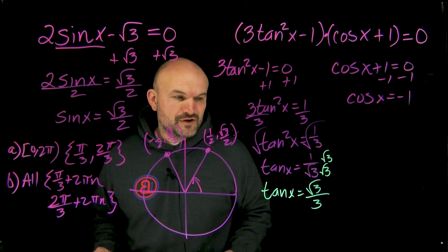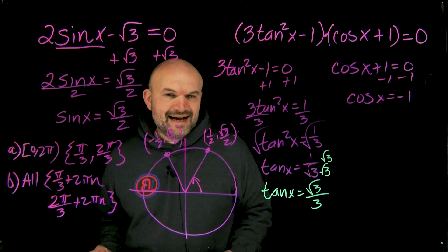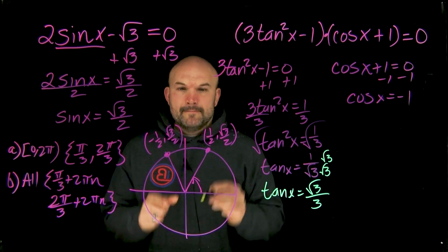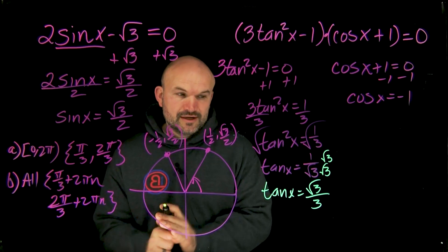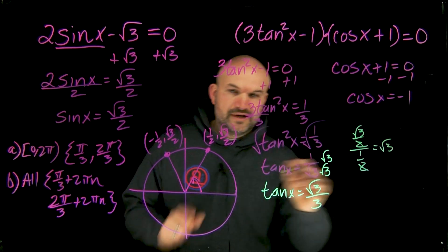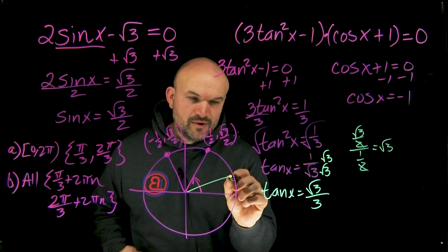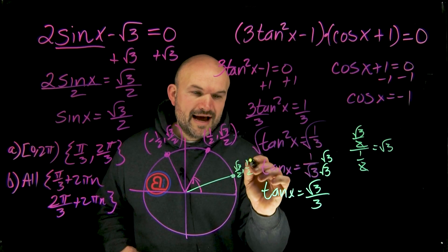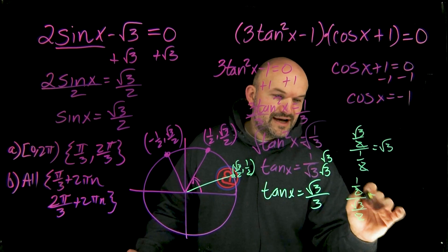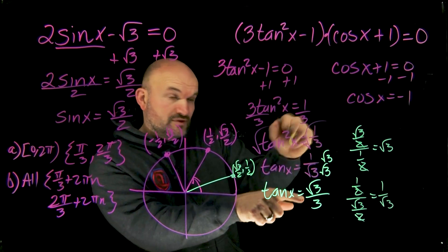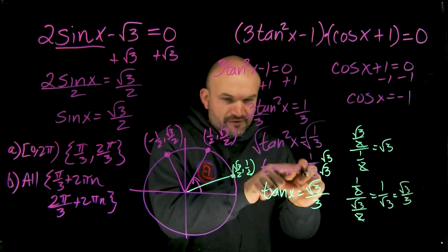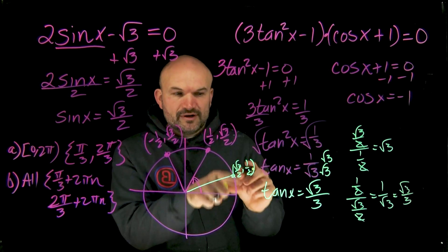After rationalizing, we have square root of three over three, and students often still don't recognize that. Let's look at two examples using y over x on the unit circle. If I take square root of three over two divided by one half, that simplifies to the square root of three. But if I swap the coordinate point to square root of three over two comma one half and take one half divided by square root of three over two, the twos divide out and I'm left with one over square root of three — which is the same as square root of three over three. So tangent equals square root of three over three corresponds to an x-coordinate of square root of three over two and y-coordinate of one half.